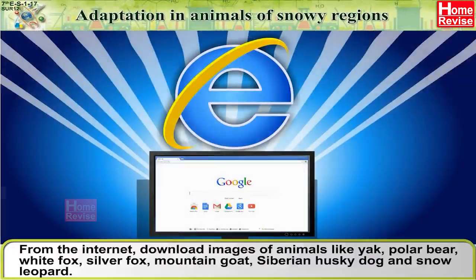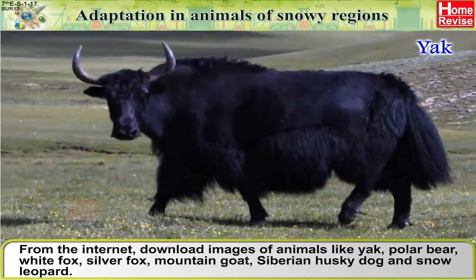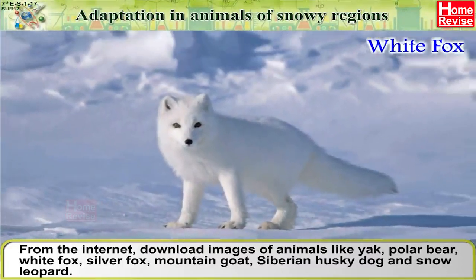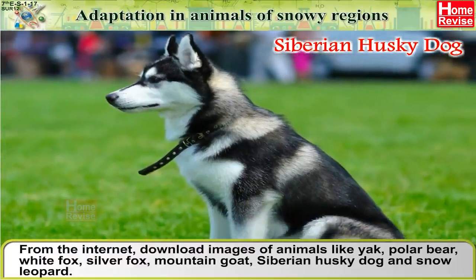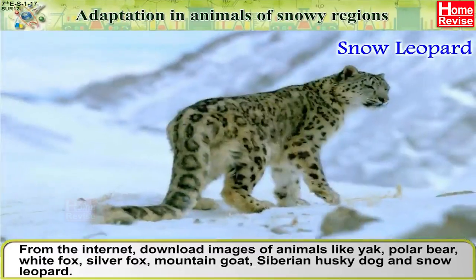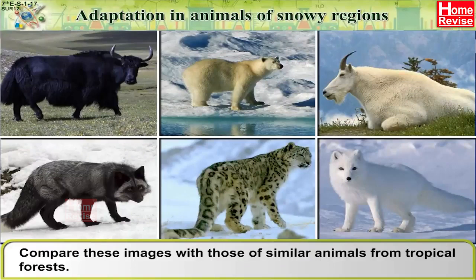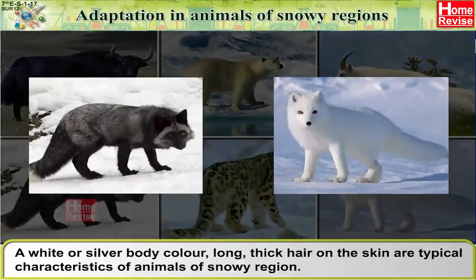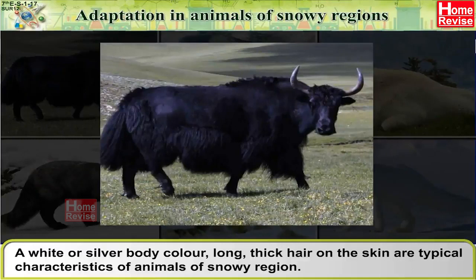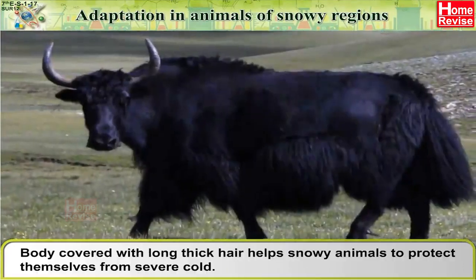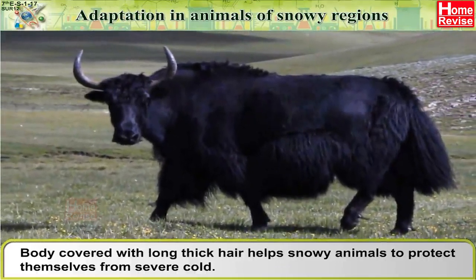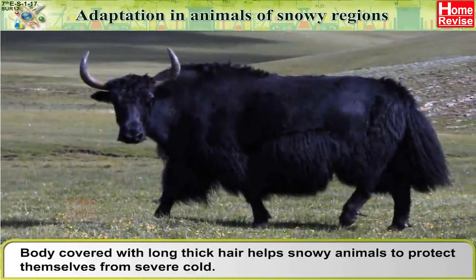Adaptation in Animals of Snowy Regions: Download images of animals like yak, polar bear, white fox, silver fox, mountain goat, Siberian husky dog, and snow leopard and compare them with similar animals from tropical forests. A white or silver body colour and long, thick hair on the skin are typical characteristics of animals of snowy regions. Body covered with long, thick hair helps snowy animals to protect themselves from severe cold.